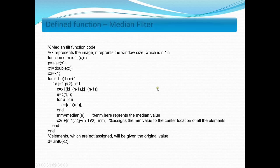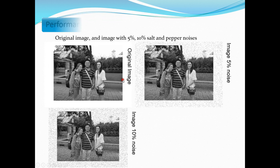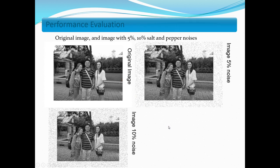This is the defined media filter function and this is how the filter works. This is the file in the attachment named mid_filter.m. Here is the original picture, this is the image with 5% salt and pepper noises, and this is with 10% noises.